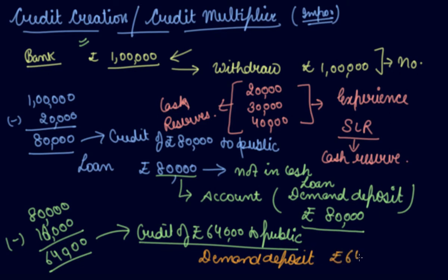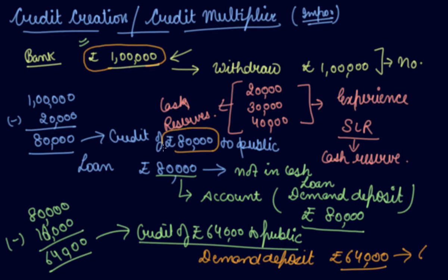Again there is a deposit of 64,000 with the bank in your name. Again there will be a cash reserve and then the remaining amount will be offered to the public as a loan. In this way, from this 1 lakh rupee the bank is creating a credit multiplier — they give 80,000 from 1 lakh, then 64,000, multiplying the amount and giving loans to the public.